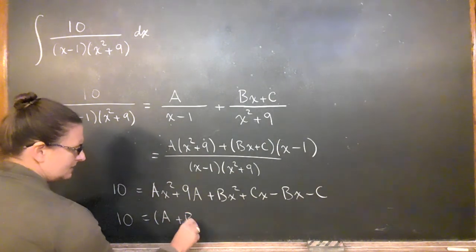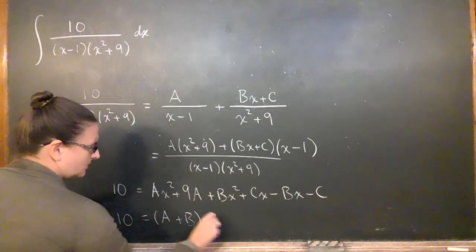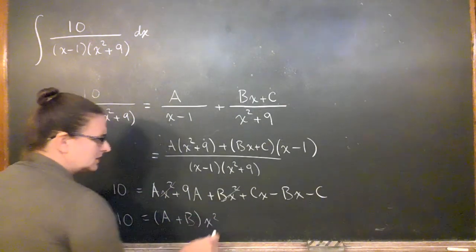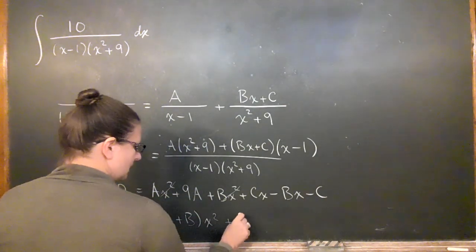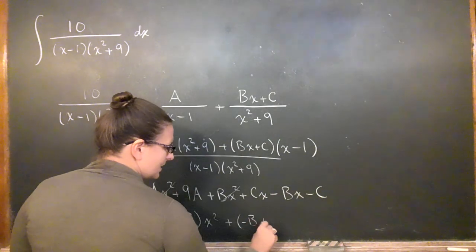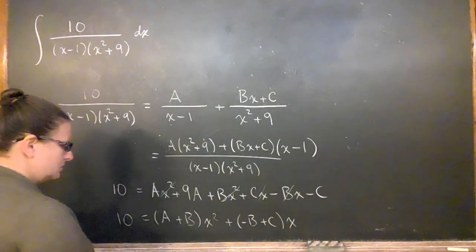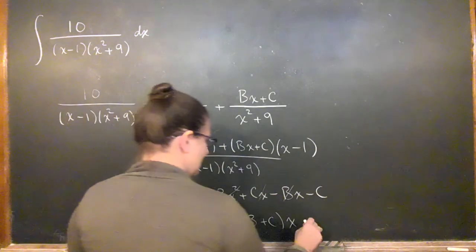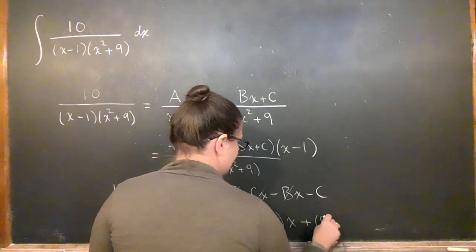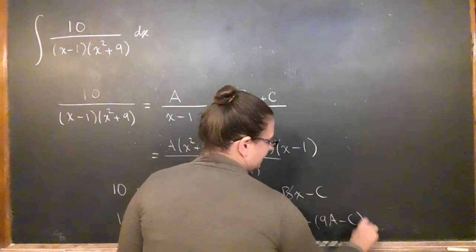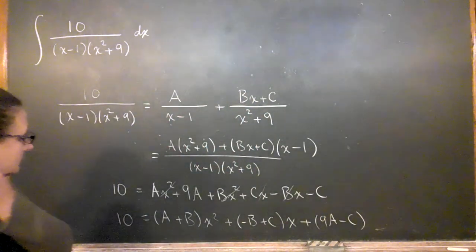a plus b times x squared. That gives those guys. And minus b plus c times x. Boom, boom. And then I've got 9a minus c times my constant.